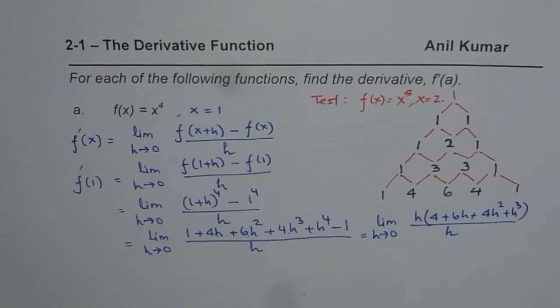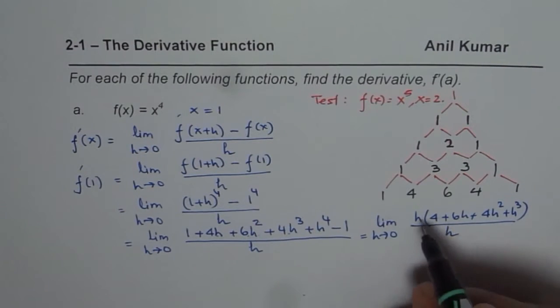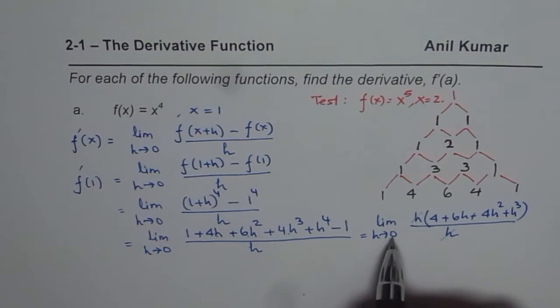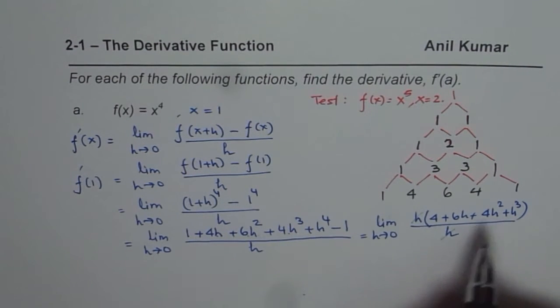So at this stage, we can always cancel out the h from the numerator and denominator. Once we do that, we can substitute 0 for h. So if I substitute 0 for h, what do I get?